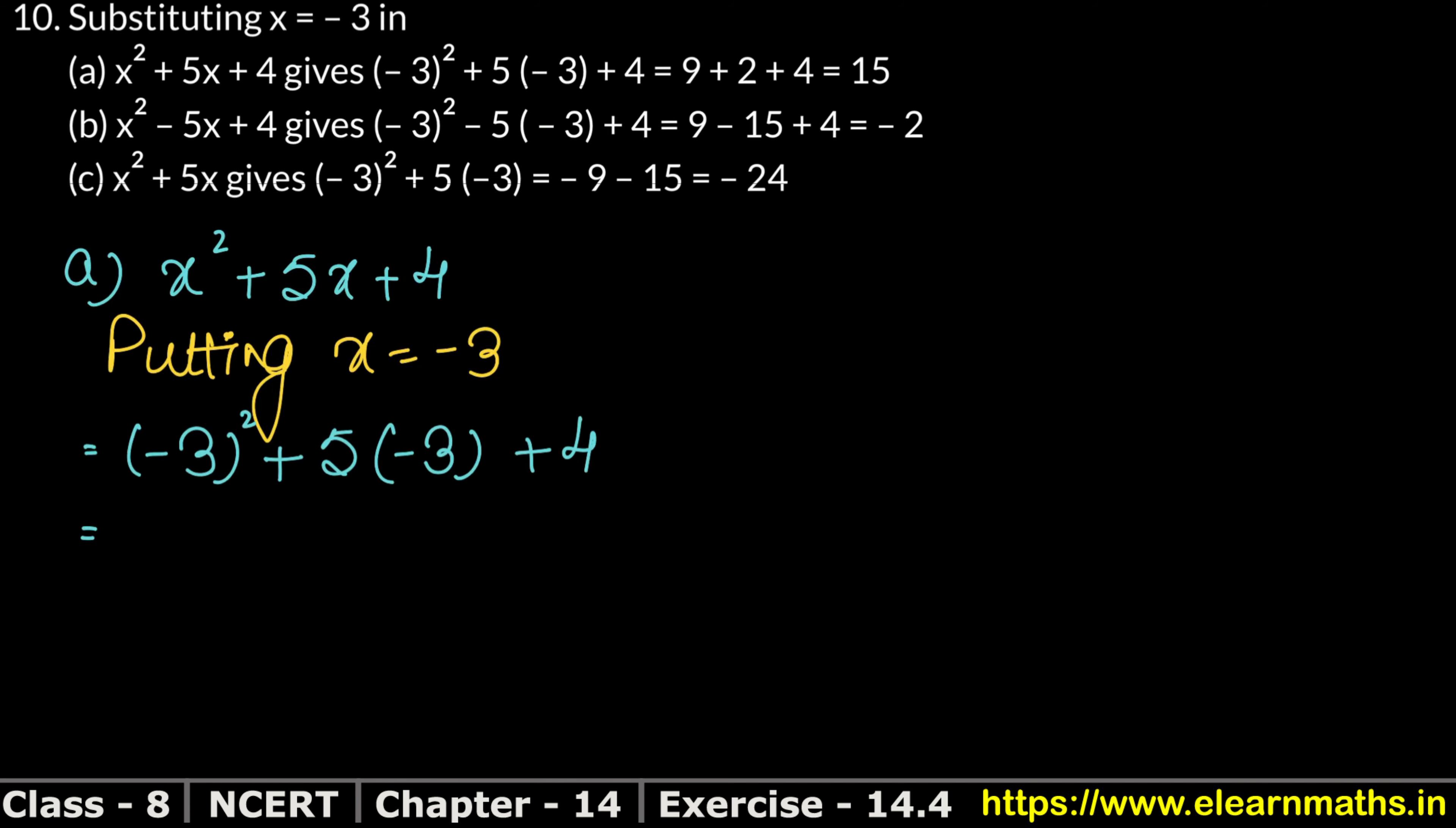What will we solve? Minus 3 whole square means minus 3 into minus 3. Multiply times, minus minus is plus, and 3 times 3 is 9. So plus 9, we have written here 9.